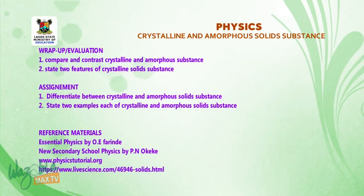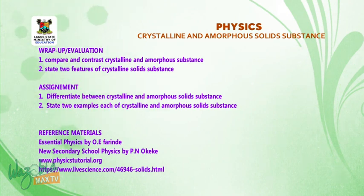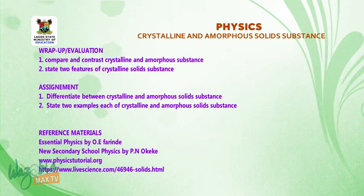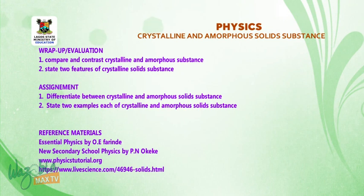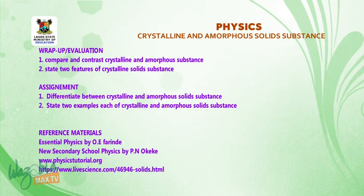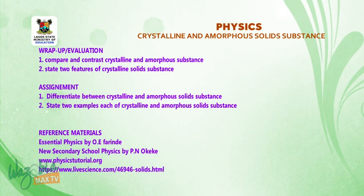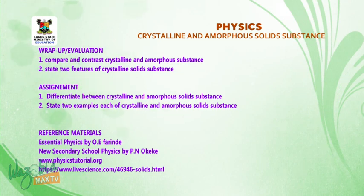At the end of this class, students should be able to compare and contrast crystalline and amorphous substances and state two features of crystalline solid substances. The assignment is: differentiate between crystalline and amorphous solid substances, and state two examples each. Reference materials are the New School Physics textbook and some online materials. Thank you.